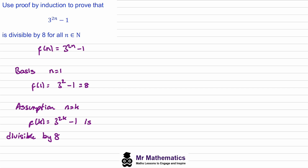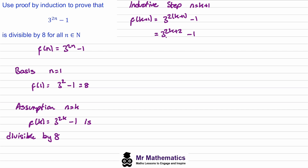For the inductive step, we let n equal k plus one and work out f of k plus one. This gives three to the power of two lots of k plus one, minus one. Expanding the bracket gives three to the power of two k plus two, minus one. We apply the rules of indices to split this up: three to the power of two, multiplied by three to the two k, minus one. Since three squared is nine, we write nine multiplied by three to the two k, minus one. Now we need to write three to the two k in terms of f of k.